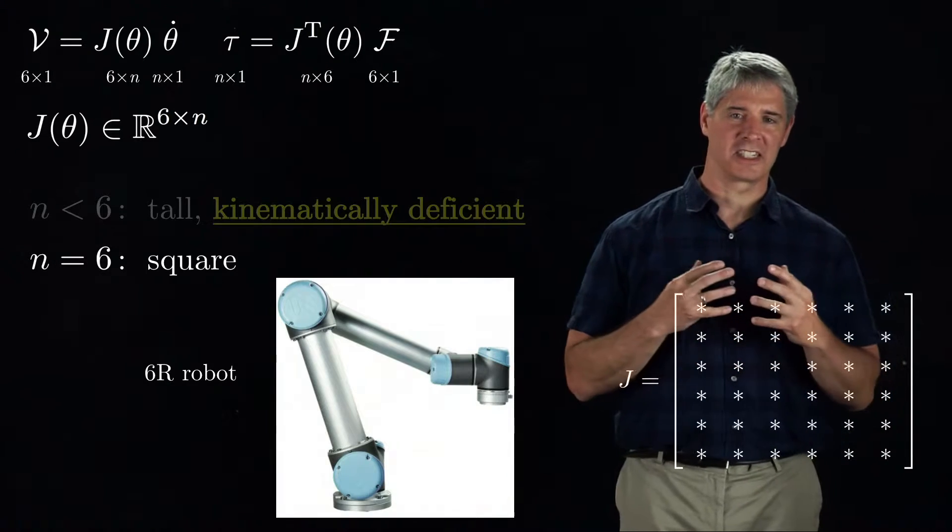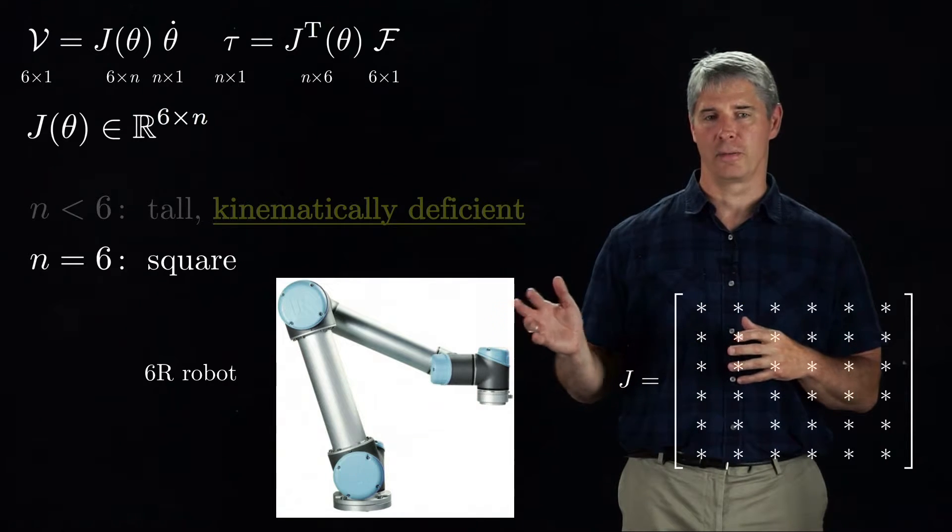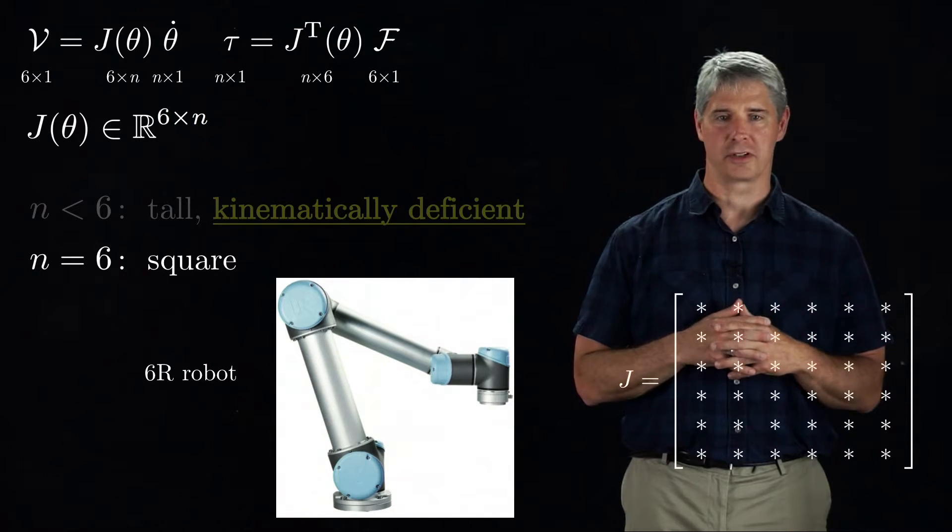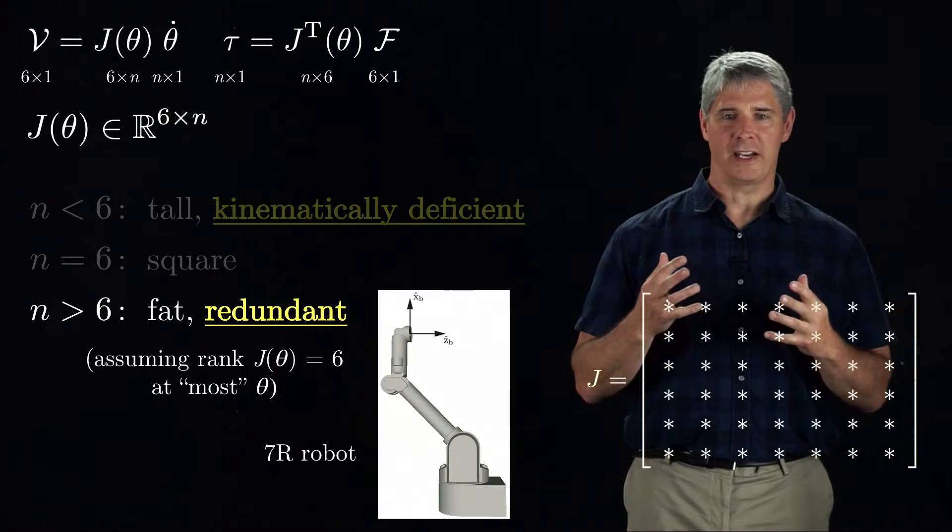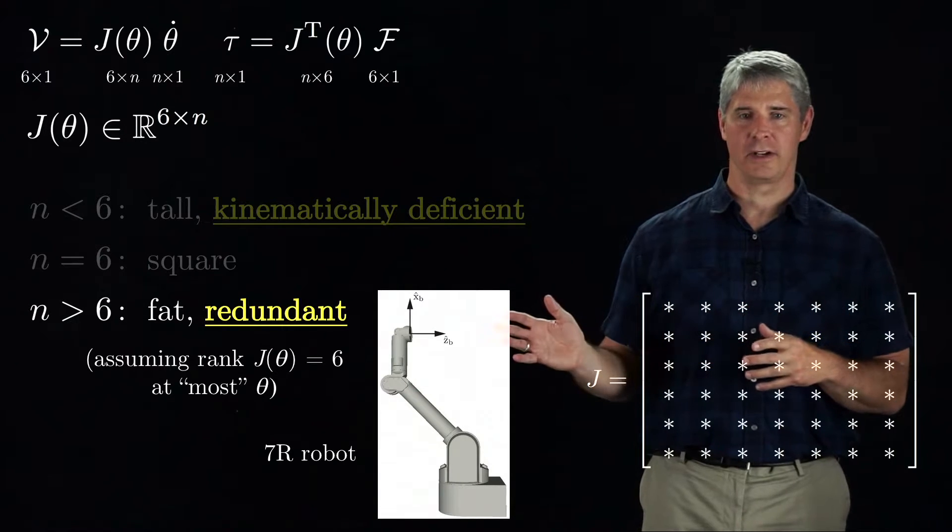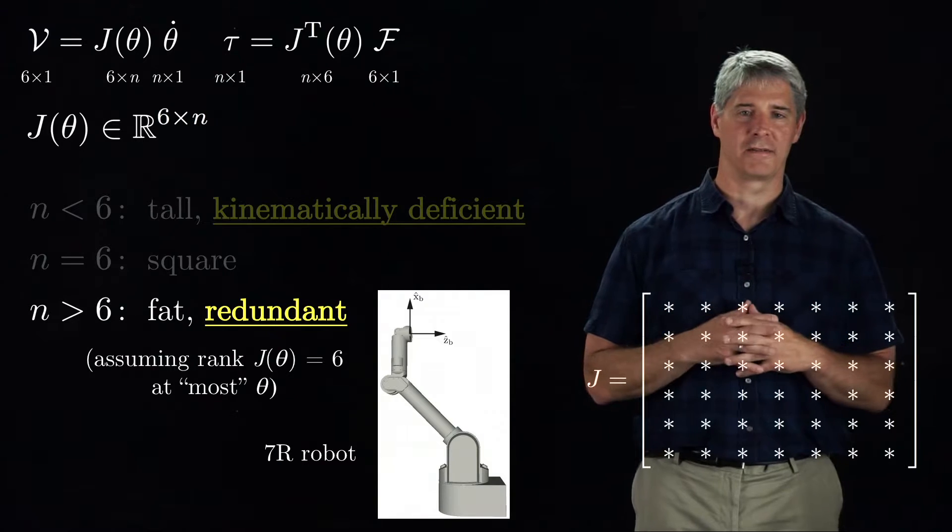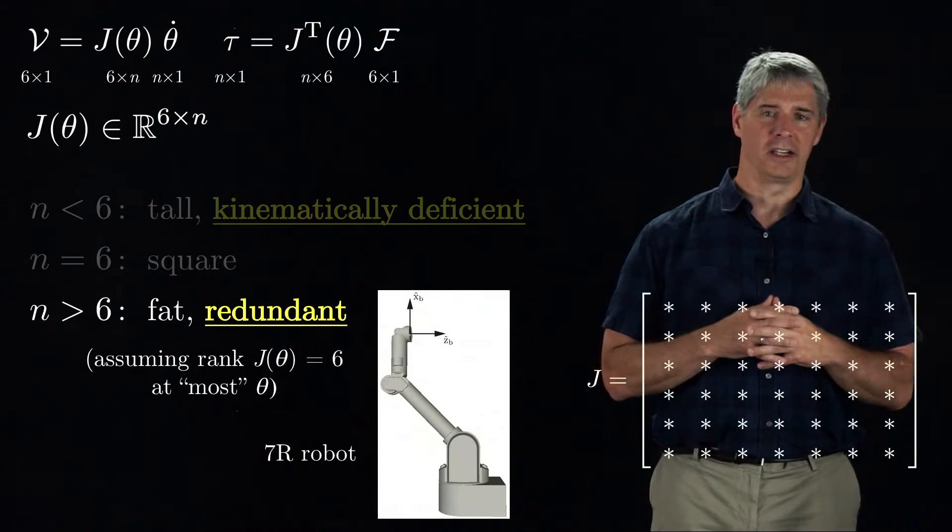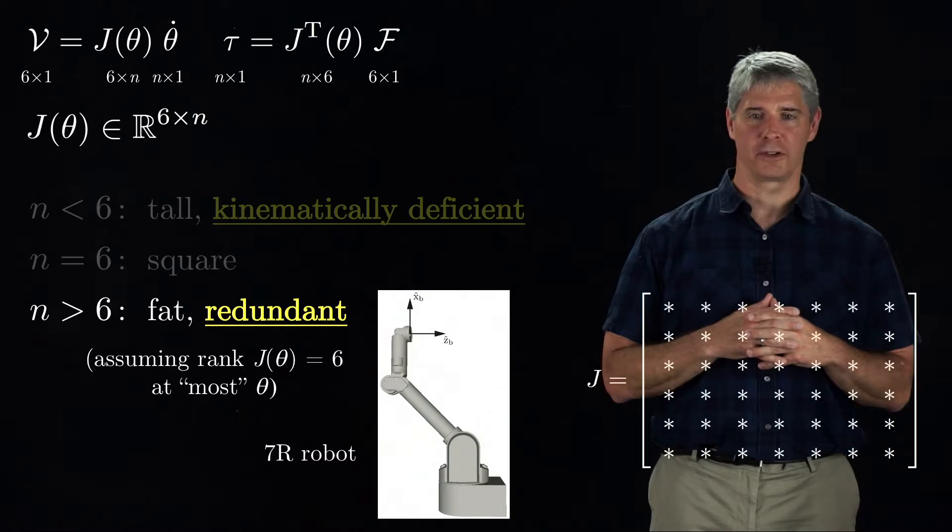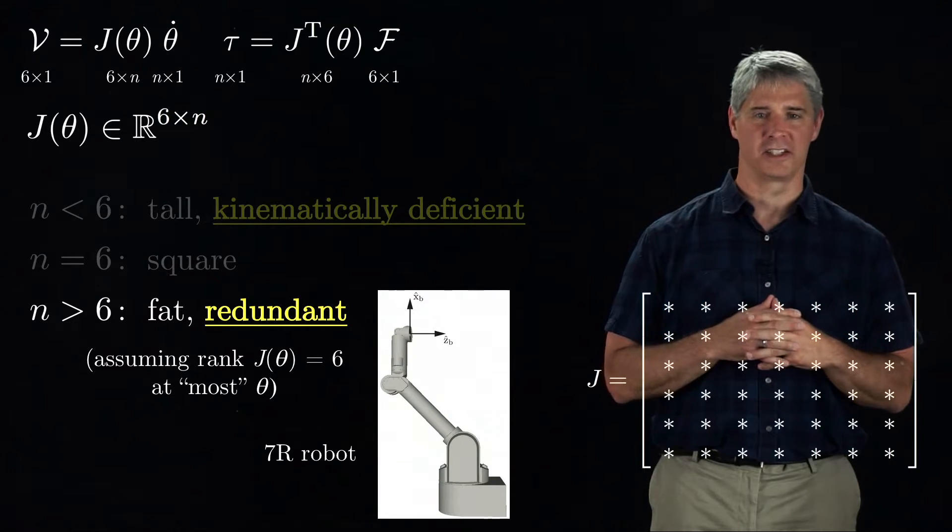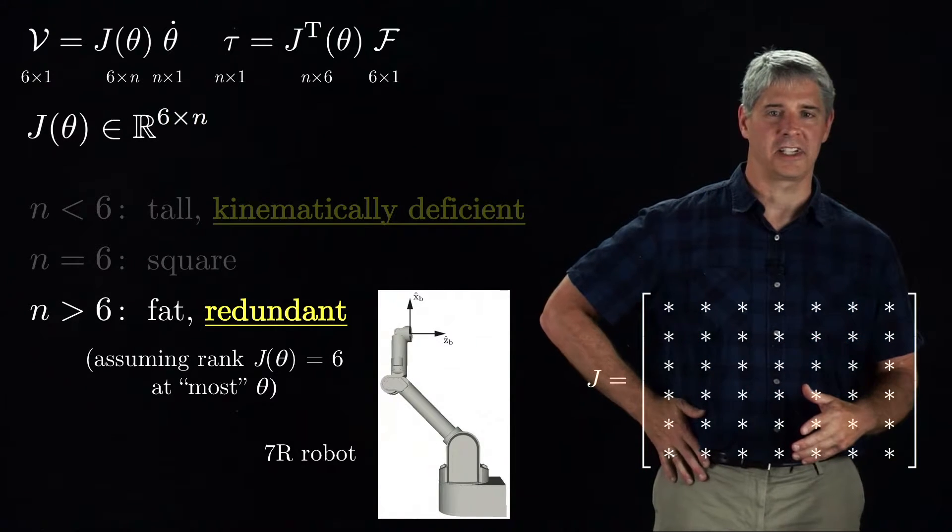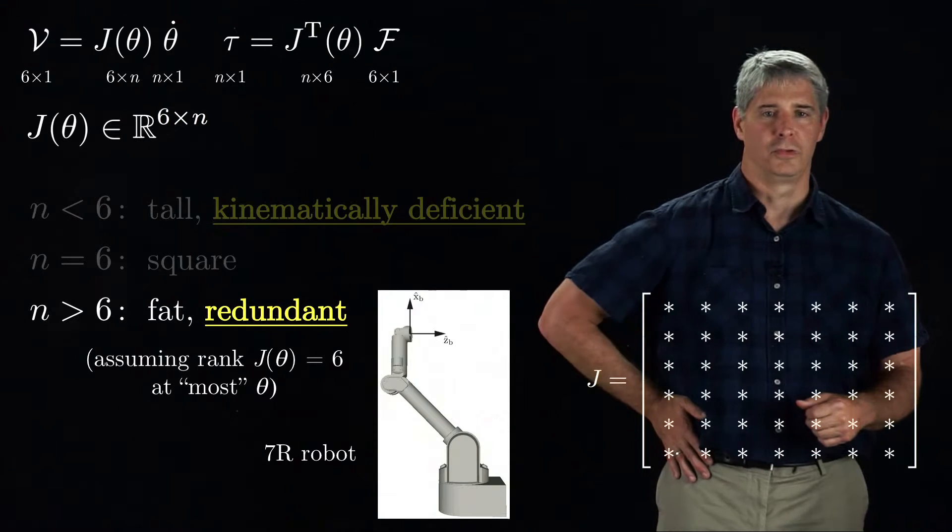If n equals 6, the Jacobian is a 6 by 6 square matrix, as for this 6R robot. Such robots are often called general-purpose manipulators because they're capable of general six-dimensional rigid body motions at their end-effectors. If n is greater than 6, the Jacobian is fat, meaning it has more columns than rows. An example of such a robot is the 7R robot pictured here, which has a 6 by 7 Jacobian. Such robots are called redundant because they can achieve the same end-effector twist with different joint velocities. This capability can be useful in a number of circumstances, allowing internal motion of the arm that is not visible in motion at the end-effector. Your own arm has a redundancy like this. Keeping your hands stationary to fixed configuration in space, you can still move your arm internally.